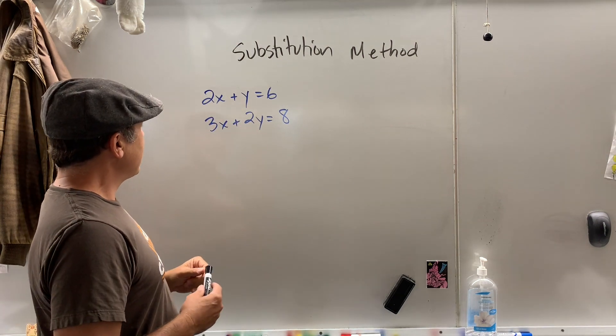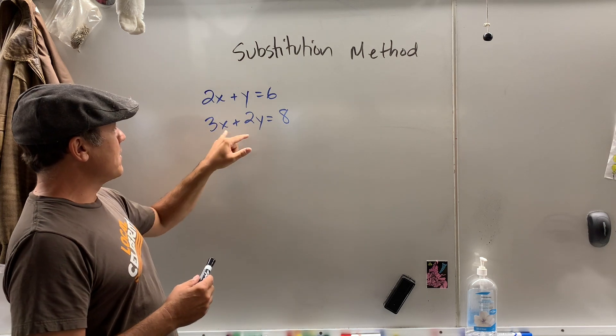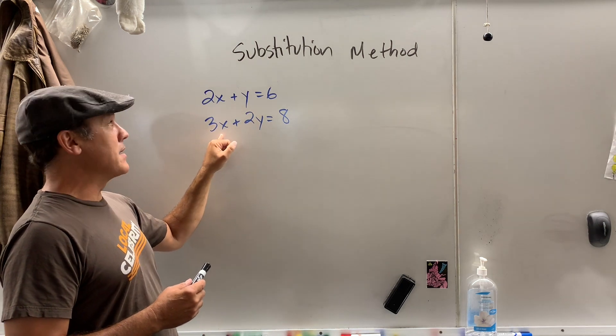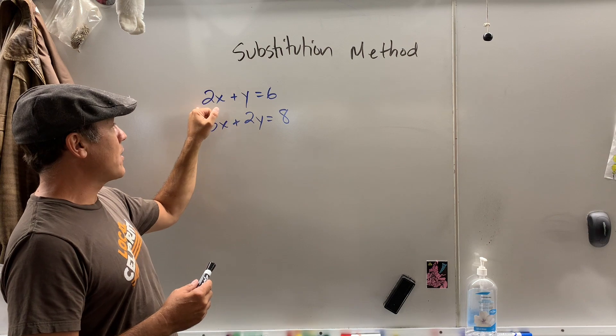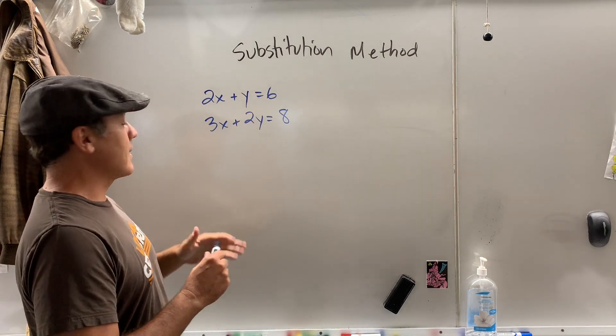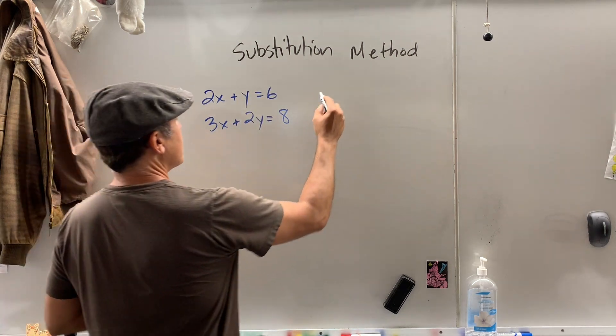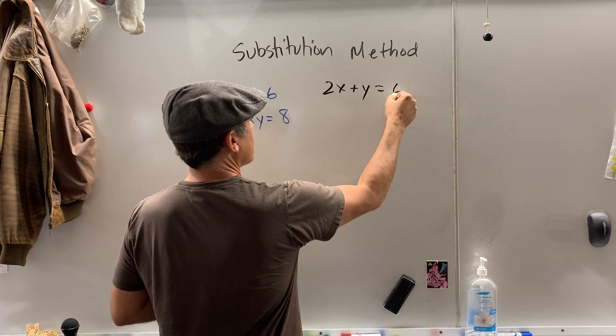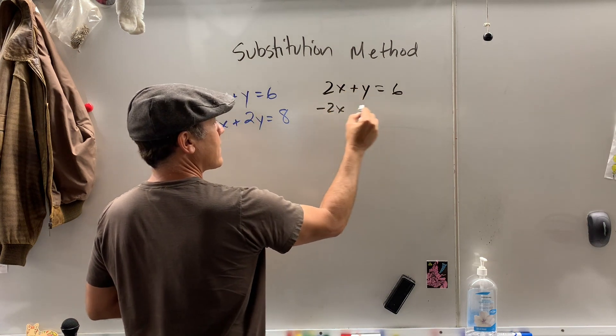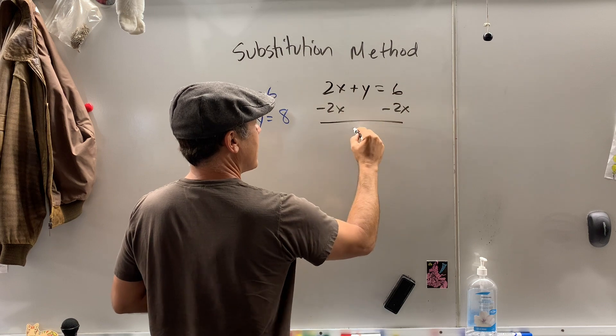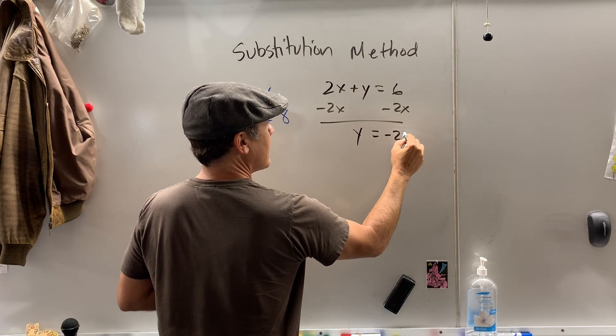So if I'm looking at this, I would have to do a couple things to get a variable here by itself. But up here, I would just need to subtract 2x to get one variable by itself. So what I'm going to do is take 2x plus y equals 6. I'm going to subtract 2x on both sides. Now I've isolated a variable.